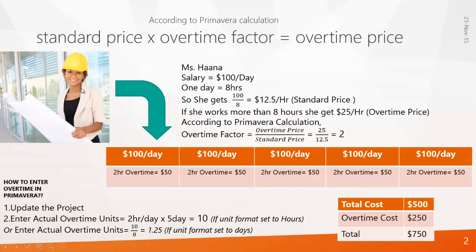So we'll see an example. This is Miss Hannah. She's getting a salary of $100 per day. According to my calendar, one day is eight hours, so that means she's getting $12.50 per hour — this is called the standard price. And if she works more than eight hours in the company, she will be getting paid $25 per hour as overtime price — this is called the overtime price.